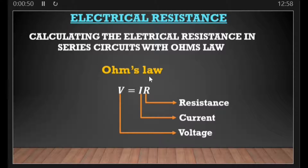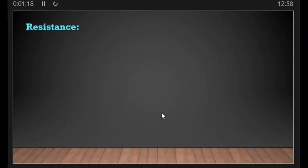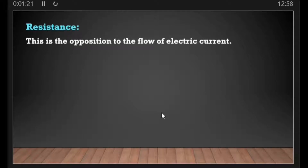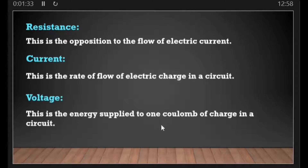I did a previous video that talked more about what Ohm's law is, and if you want to understand it better you can click on the link appearing here. Before we dive deep into today's video, let us look at what resistance, current, and voltage are. Resistance is defined as the opposition to the flow of electric current. Current is defined as the rate of flow of electric charge in a circuit, while voltage is defined as the energy supplied to one coulomb of charge in a circuit.